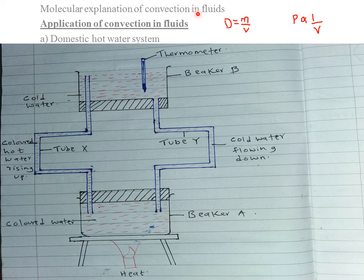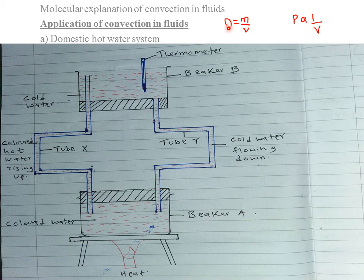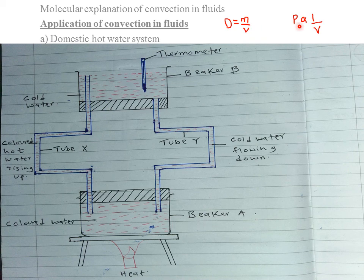How are convectional currents created? When you heat one part of a fluid, the molecules gain kinetic energy — kinetic energy is the energy in motion. When molecules gain kinetic energy, their volume increases and therefore they become less dense. From the density formula, whenever you increase the volume while holding the mass constant, you obtain a smaller value of density. Whenever volume is increased, density is decreased. So lighter materials with low density will always float.